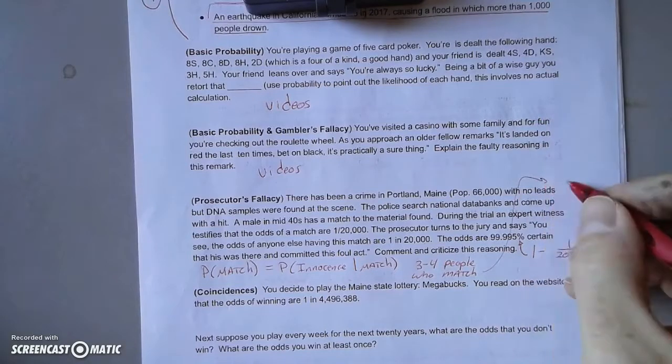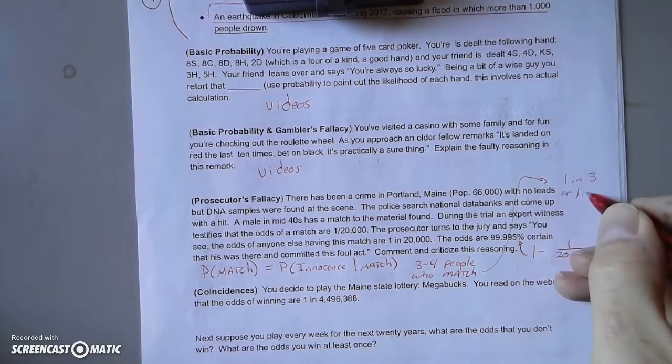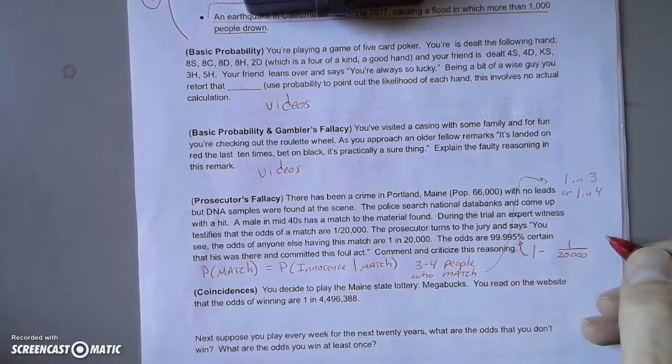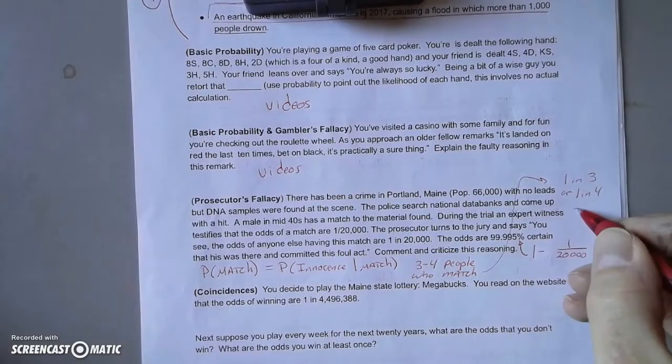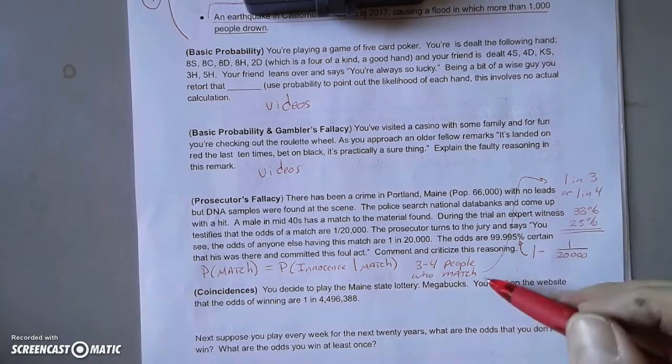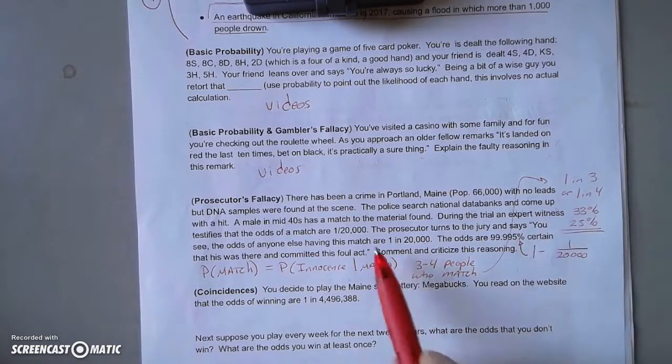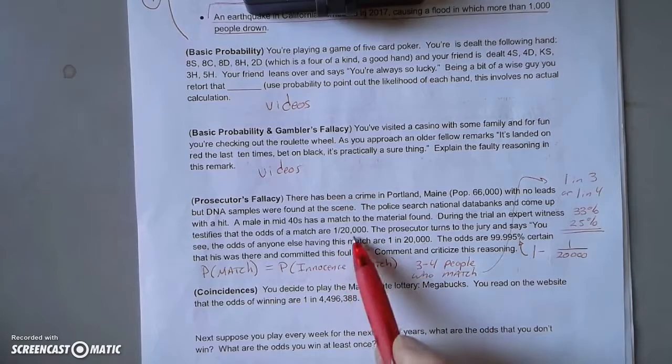Well, that doesn't sound very reliable. It sounds like you're more likely to be wrong than not if you're 33 percent or 25 percent certain that you've picked up the correct person with the match. So the prosecutor's fallacy is dangerous because it takes a number that sounds extraordinarily rare and equates it with innocence.